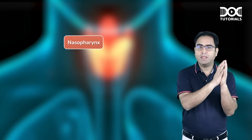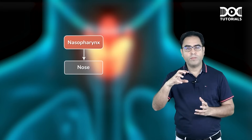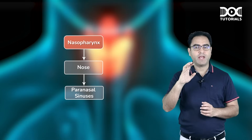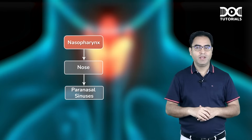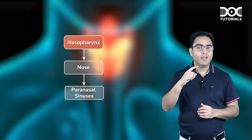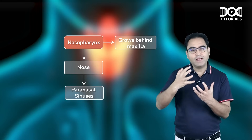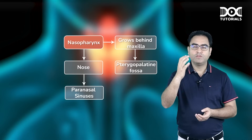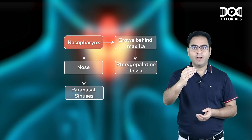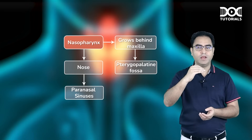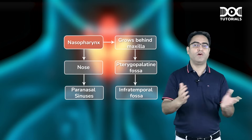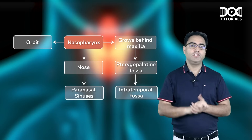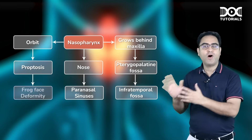It originates from the nasopharynx, then grows into the nose and into various paranasal sinuses. It can also grow into the cheek area — technically the infratemporal fossa — by growing behind the maxilla through the pterygopalatine fossa. It can also extend into the orbit, causing proptosis (eye protruding out), which is called frog-face deformity. There is also the possibility of intracranial extension.